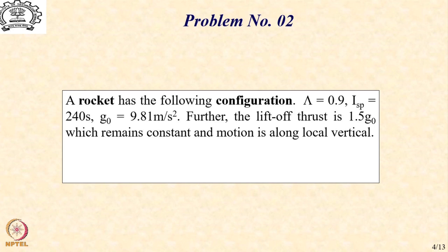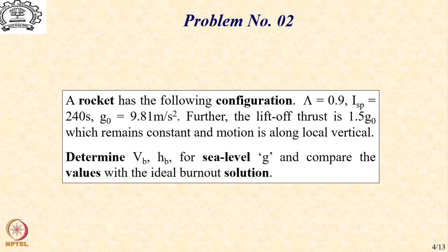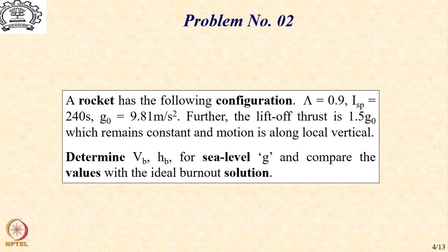Please note a constant thrust case is the same as a constant burn rate case, because thrust equals M-dot·G0·ISP. If thrust is constant, and G0 and ISP are constant for practical purposes, obviously M-dot has to be a constant. Let us try and determine the burnout velocity and altitude, first assuming the gravitational acceleration to be the sea level value, and compare these with the ideal burnout solution.